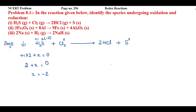Now let's find the oxidation state of chlorine in HCl. The electronegativity of chlorine is higher than hydrogen, so hydrogen will have its oxidation state as +1. So +1 + x = 0, and x = -1. The oxidation state of chlorine in HCl is -1.